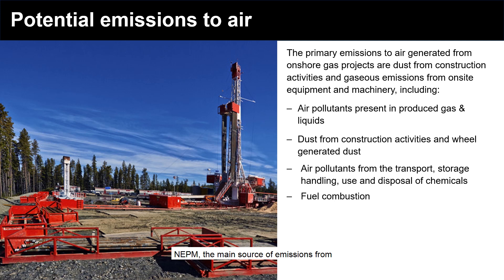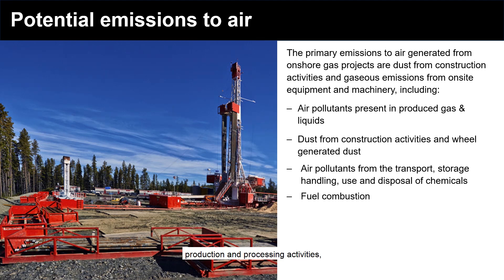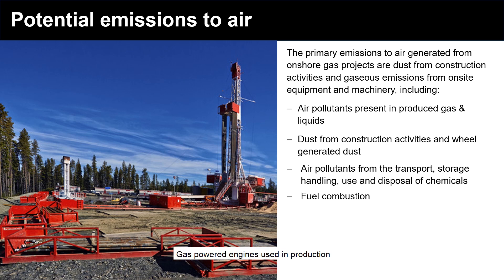The main sources of emissions from unconventional onshore gas developments are: air pollutants present in produced gas and liquids that are intentionally or unintentionally released from gas infrastructure; dust from construction activities and wheel-generated dust from movements of vehicles and equipment; air pollutants from the transport, handling, use and disposal of chemicals used in well development, production and processing activities; and fuel combustion, which can include flaring of gas at well pads and processing facilities, gas-powered engines used in production and processing infrastructure, and diesel-powered vehicles, equipment and plant used in well development and operations.